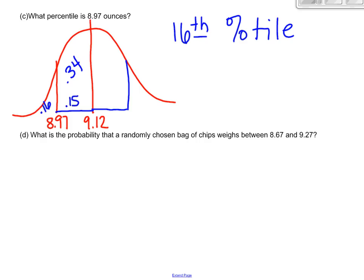Randomly chosen between 8.67 and 9.27. So I'm going to use some notation because I'm being asked about probability again. 8.67 is less than x is less than 9.27. So what I'd like for you to do right now is pause me and try to find this probability on your own. Remember, draw a picture, shade it, find the probability. So pause me.